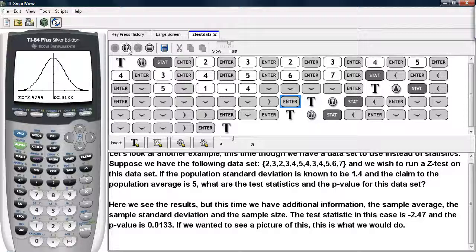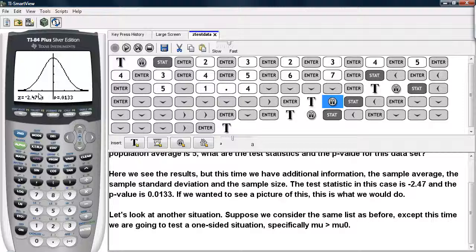And then hit Enter, and it draws our normal distribution. We have the p-value as the sum of these two areas here, and the test statistic is just the distance from the vertical axis, or the center line, if you will, to this area where it starts to shade.